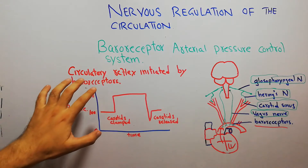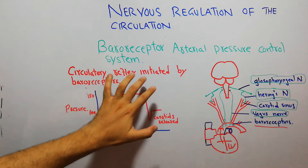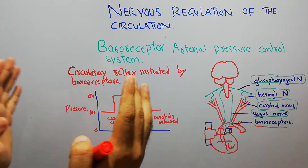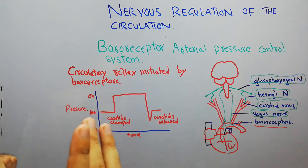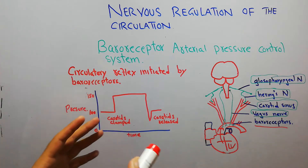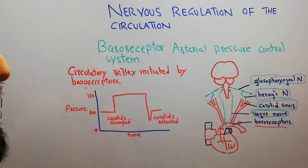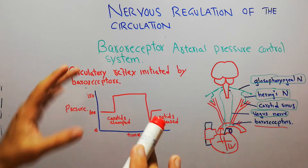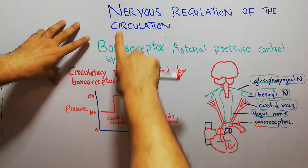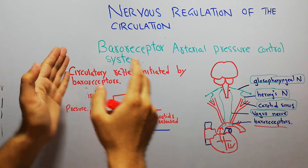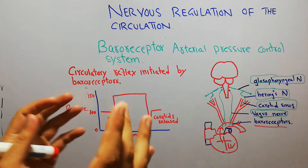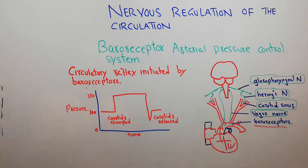In this lecture we are going to discuss the circulatory reflex initiated by baroreceptors. What happens when the baroreceptors have been activated? In the last two lectures we discussed the physiologic anatomy of baroreceptors and their response to arterial pressure. Now we are discussing the nervous regulation of the circulation, specifically the baroreceptor arterial pressure control system and how baroreceptors help in control of arterial pressure.